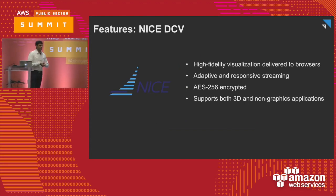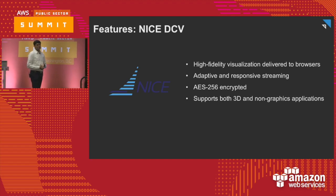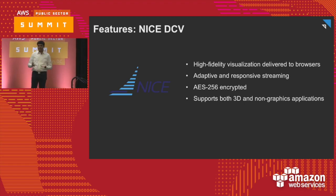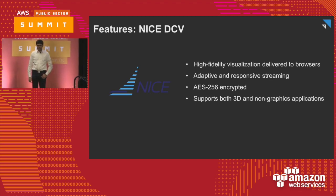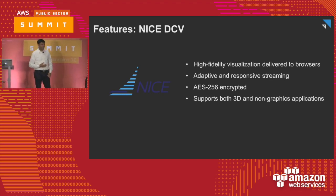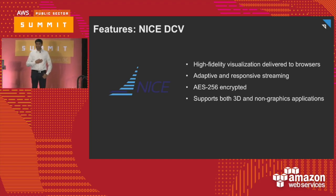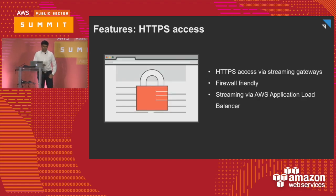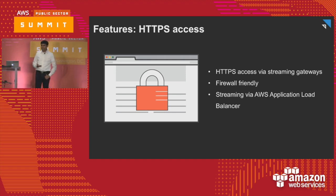Some of the key features for AppStream: it uses a streaming technology called NiceDCV, which allows streaming over HTTPS. It is fully encrypted end-to-end — AES-256 encrypted. It's well suited for both 3D and non-3D workloads, whether a business application or something that uses heavy graphics. It has adaptive streaming, so it only sends the pixels that are really needed and will never use too much bandwidth. All streaming is over port 443 — it's firewall-friendly and works out of the box.